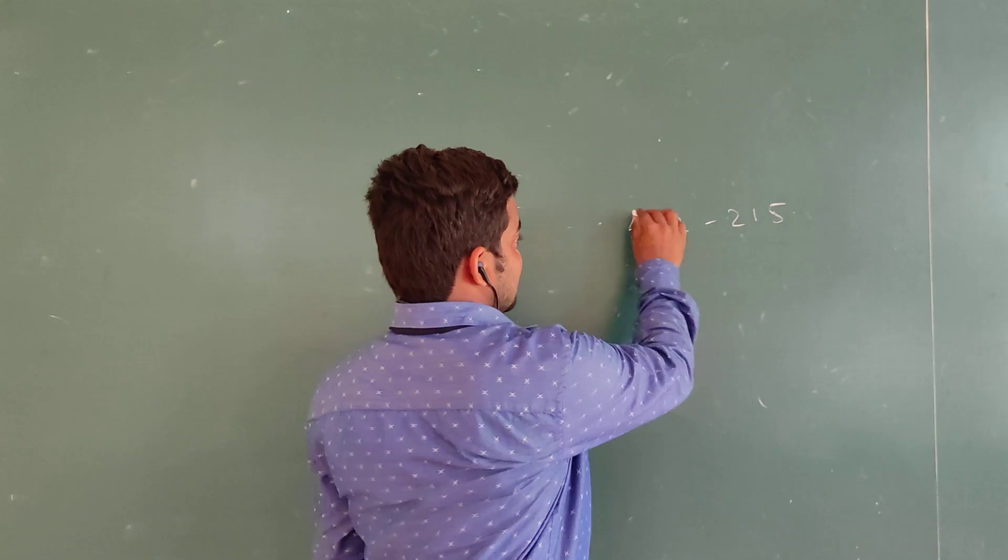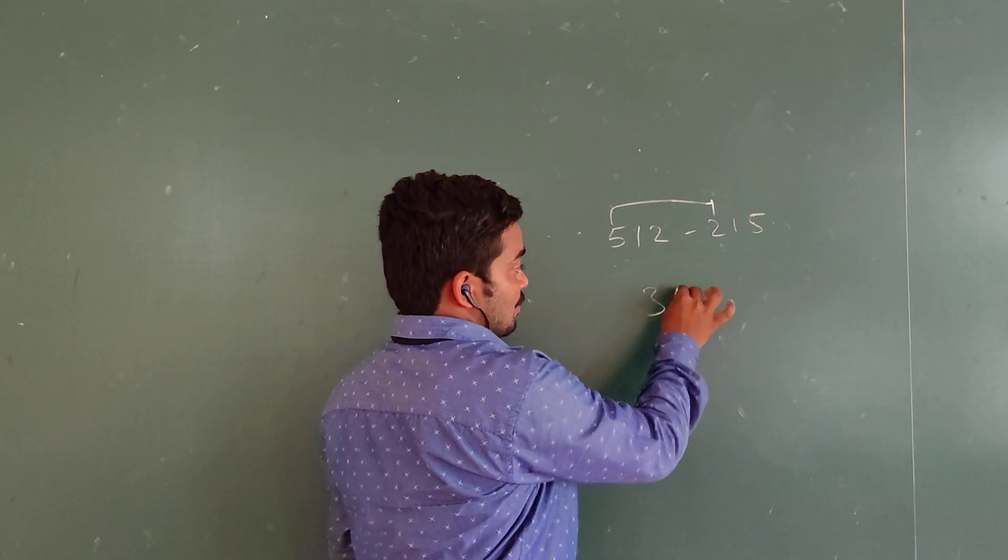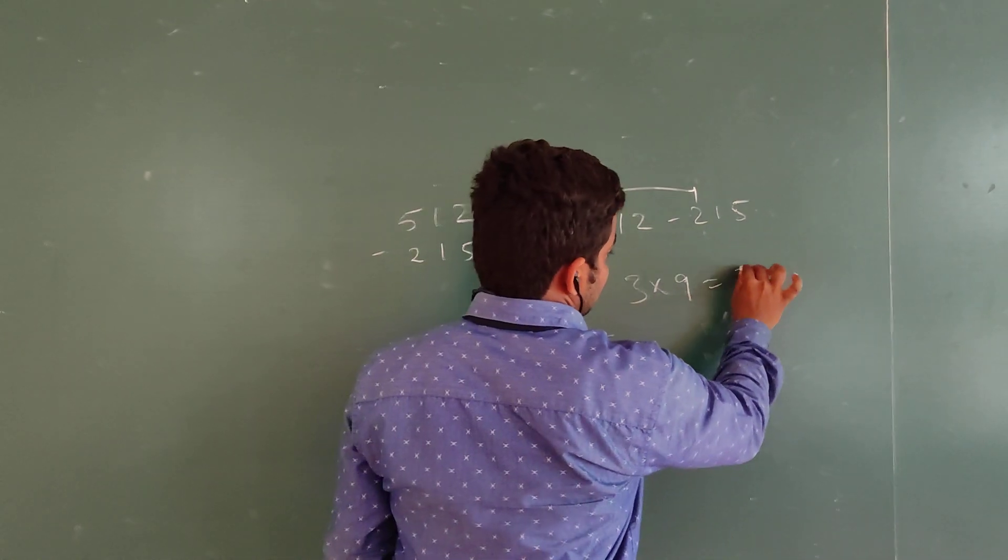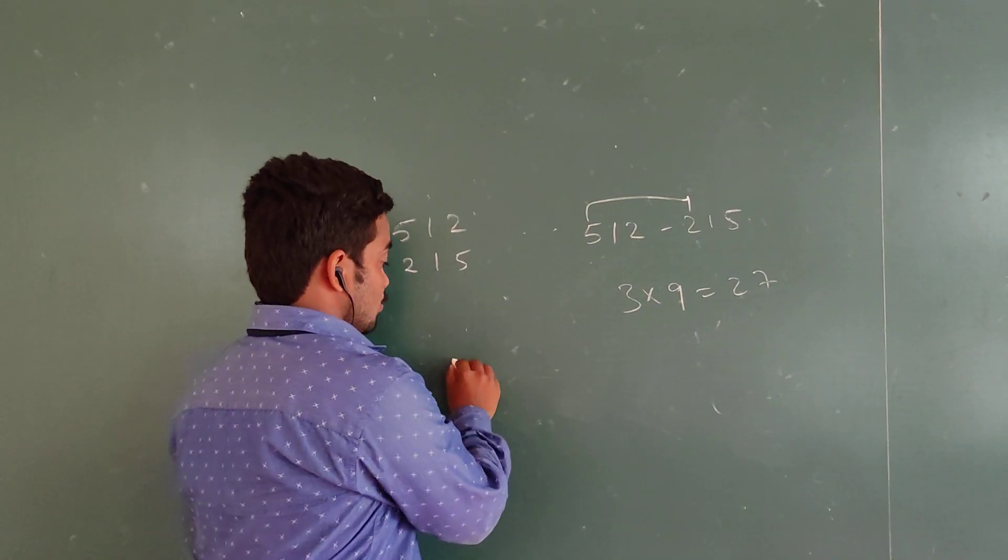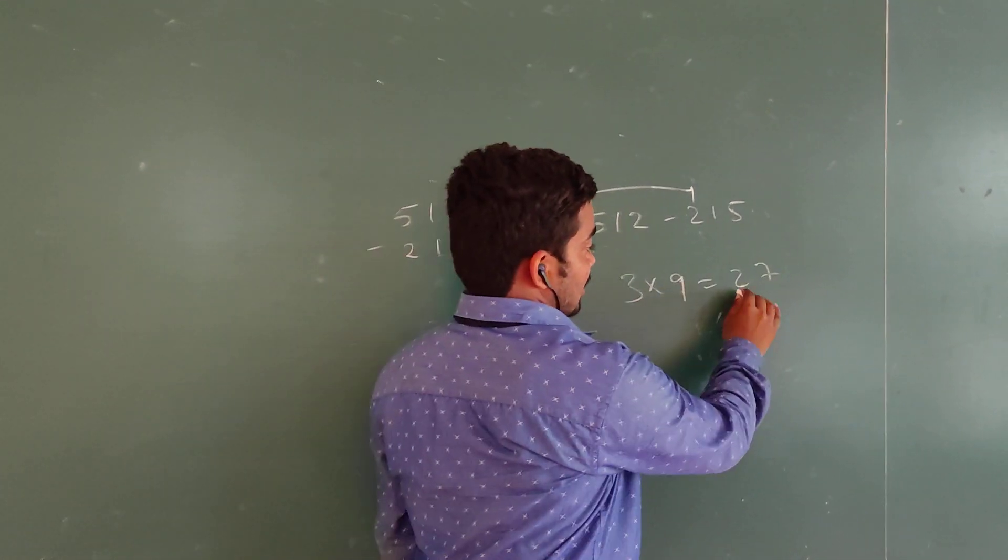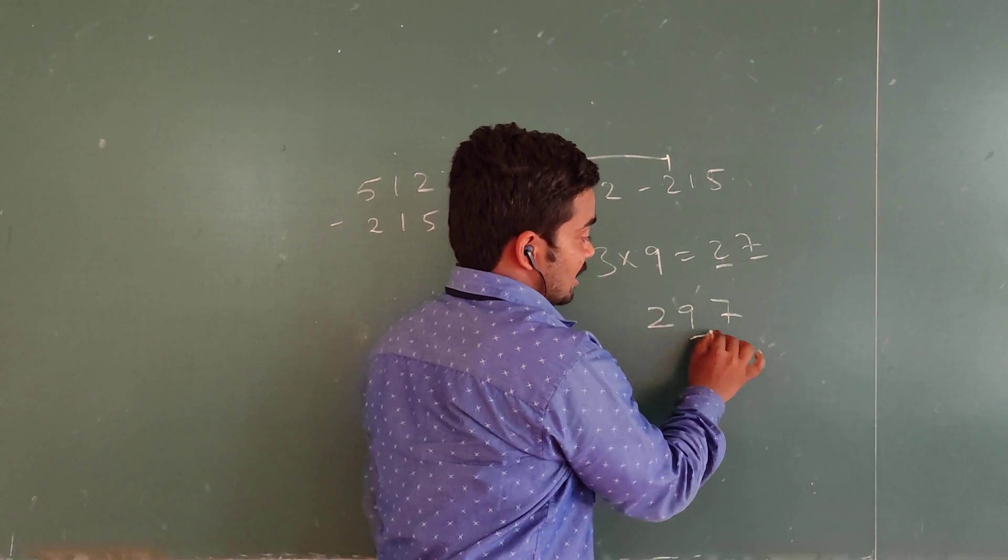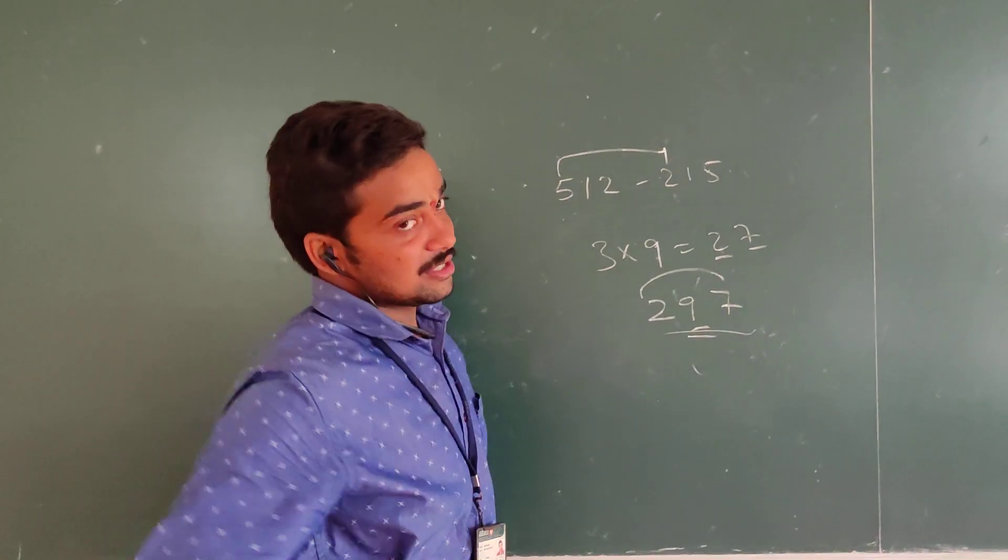Now, just subtract the first digits: 5 minus 2, how much? 3. Multiply with 9: 27. Earlier, I told you that this leads to two-digit numbers, but here three-digit numbers. For that, we got 27. Now, our answer is 297—write 9 in between these two numbers. This is your answer.